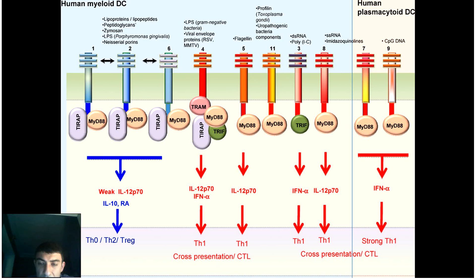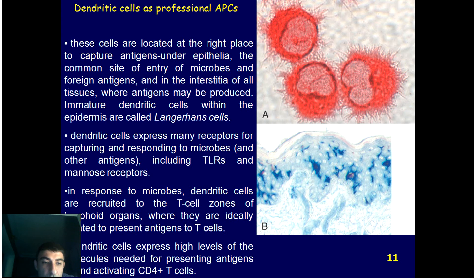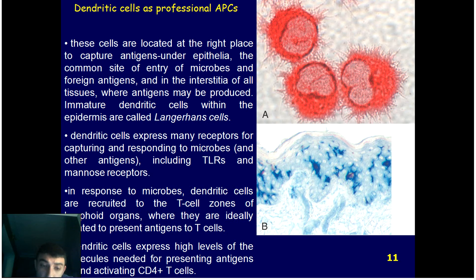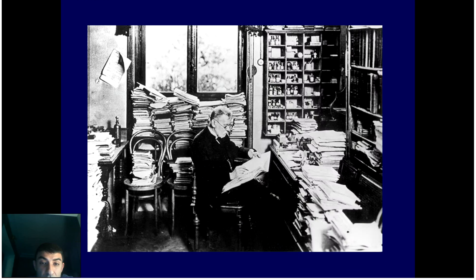In response to these microbes, the dendritic cells are recruited to the T cell zones of lymphoid organs, reaching there through lymphatics, where they are ideally located to present antigen to T cells. They also have MHC class II molecules and the necessary co-receptors in order to efficiently present antigen to T-helpers.